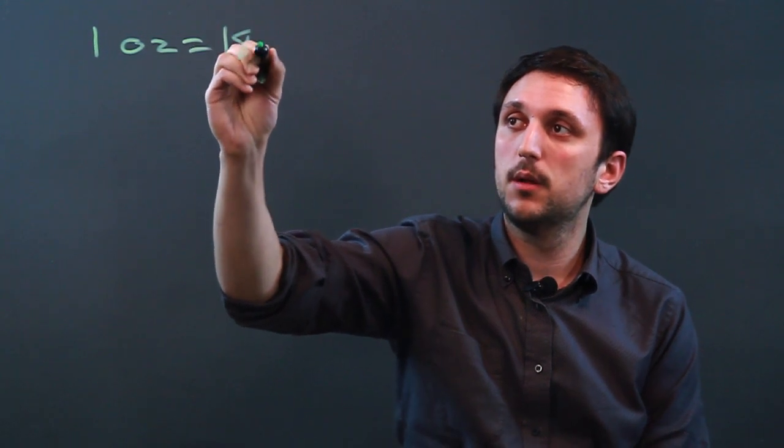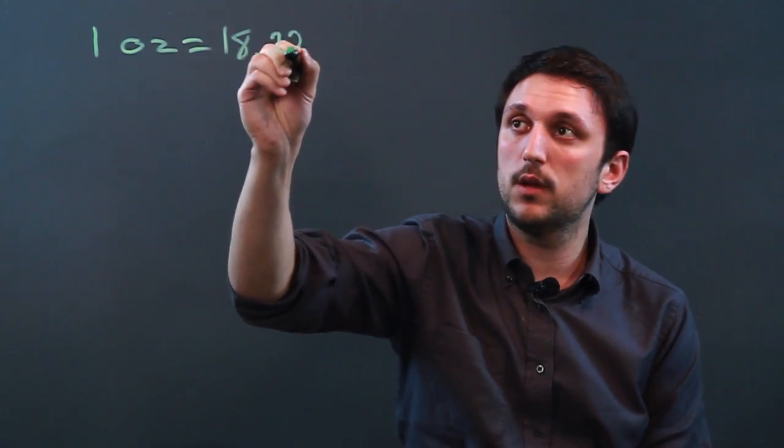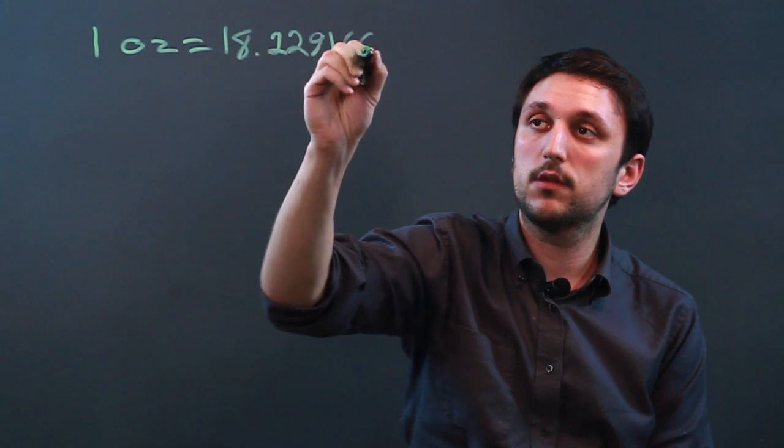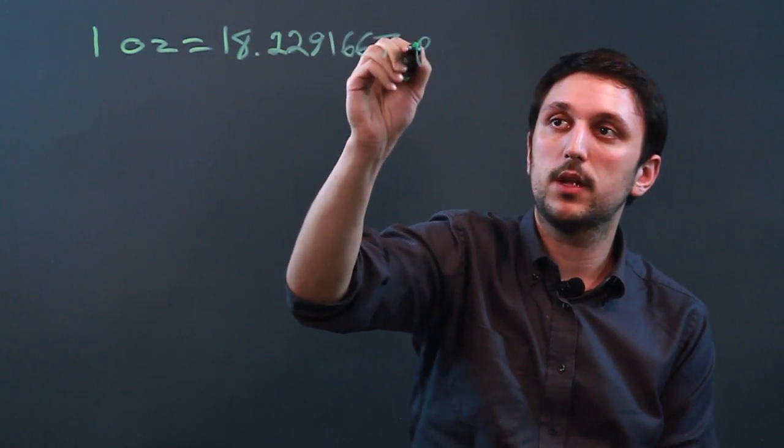So you're probably thinking pennyweight to ounces because they both are measures of mass. So one ounce is equal to 18.2291667 pennyweights.